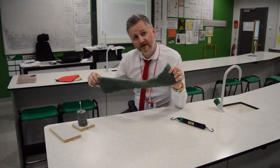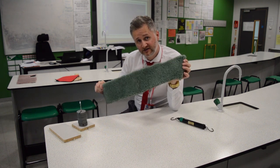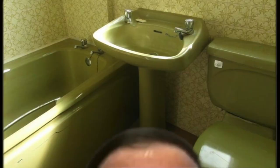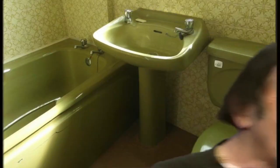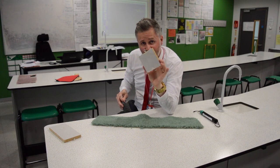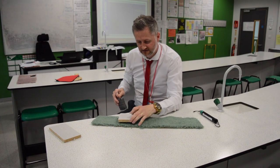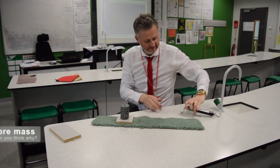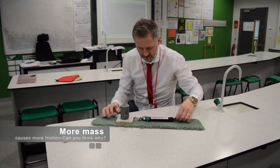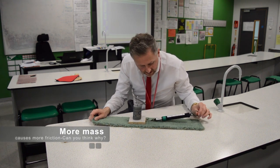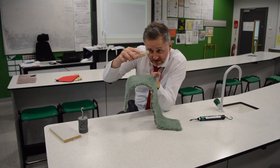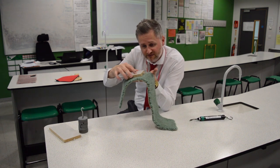Two and a half newtons. If I use this surface, which is more rough, I use the same size area of board and the same amount of mass on the back of the board. This time, four newtons. That must be because the surfaces are interlocking more.